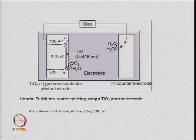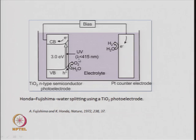The photo electrode here is titanium dioxide, an n-type semiconductor material, and the other electrode is the platinum electrode. When you shine light on this electrode, the light should have a wavelength less than 450 nanometers, because then only it will have energy more than 3.1 electron volts. Only if the light has energy more than the band gap can it produce electrons and holes.